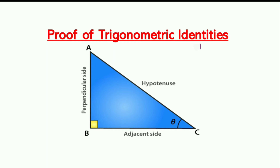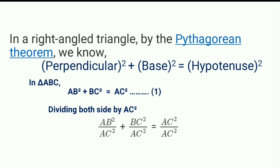Proof of trigonometric identities: Consider triangle ABC where angle C is theta and angle B is 90 degrees. The opposite side of 90 degrees is the hypotenuse (AC), the opposite side of theta is the perpendicular (AB), and BC is the base. In a right angle triangle, by the Pythagoras theorem: perpendicular² + base² = hypotenuse², so AB² + BC² = AC².